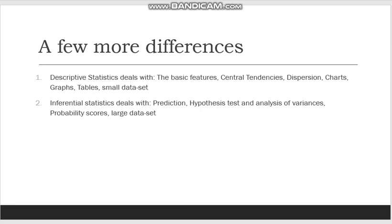On the other hand, inferential statistics is trying to make predictions about the entire school, which includes your class as well. Pizza Hut wants to know how many of you are going to buy cheese pizza — that's what we call probability, and it is much harder than your 10th grade probability calculations. One key difference is that descriptive statistics works best when we have a small dataset, whereas we use inferential statistics when we have a large dataset.